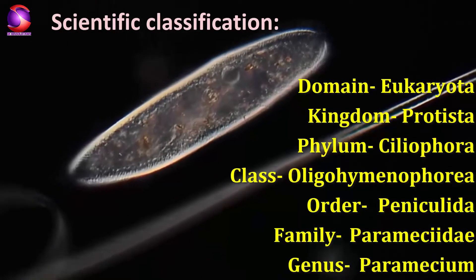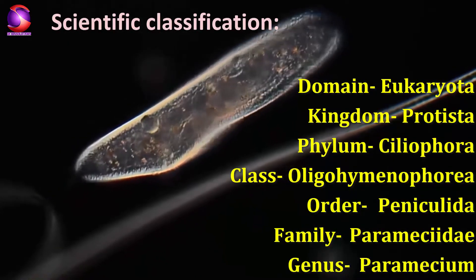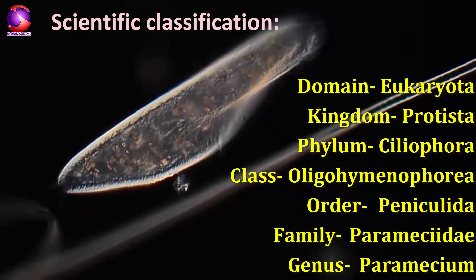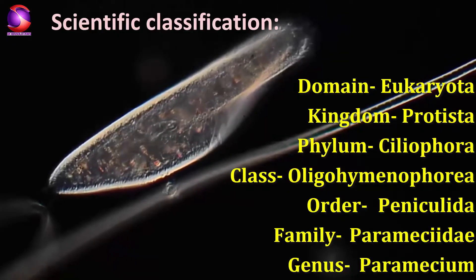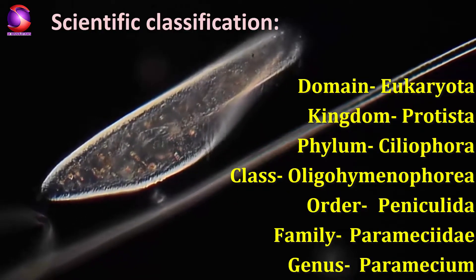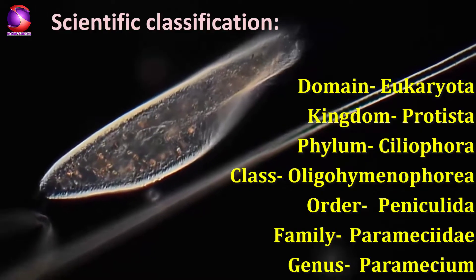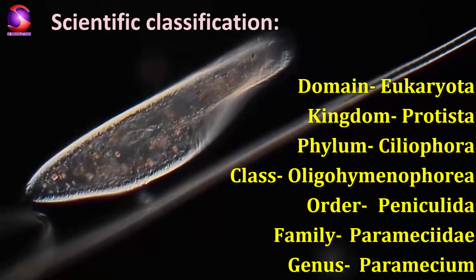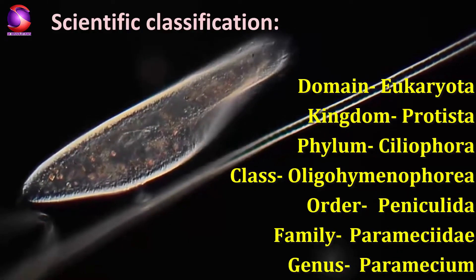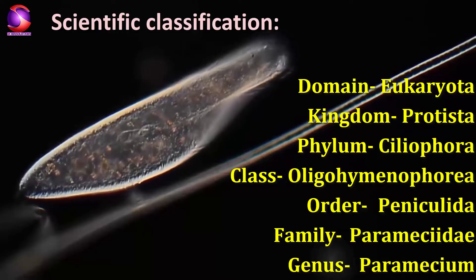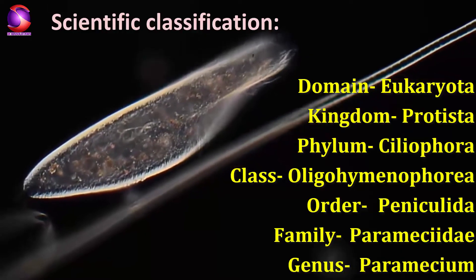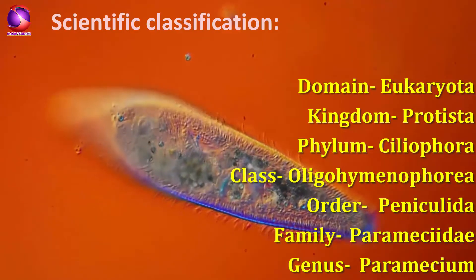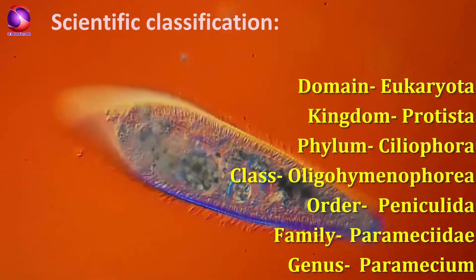Further, we will look into the scientific classification and examples of Paramecium. Paramecium belongs to the domain Eukaryota because a nucleus is present in the cell body. Further in classification, it belongs to Kingdom Protista, Phylum Ciliophora, Class Oligohymenophoria, Order Paniculida, Family Parameciidae, because members of this family have differentiated anterior and posterior regions and are bounded by a rigid but elastic pellicle. And Genus Paramecium.